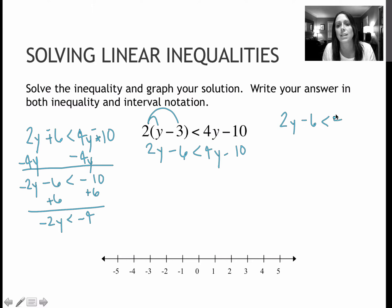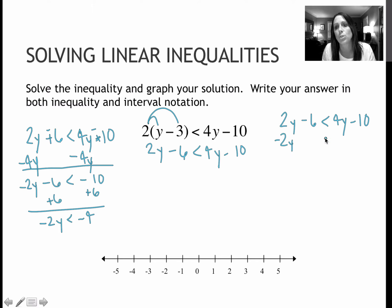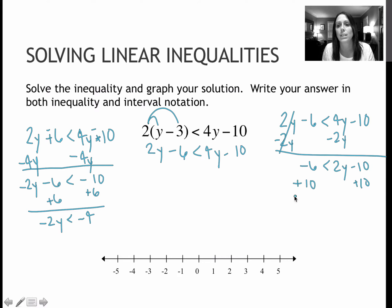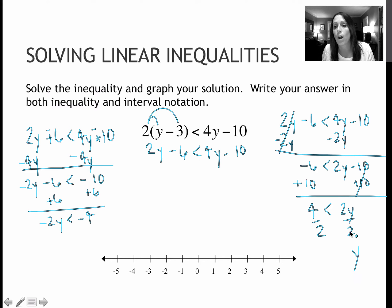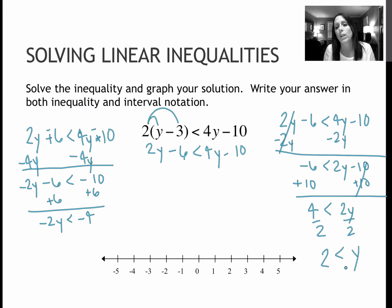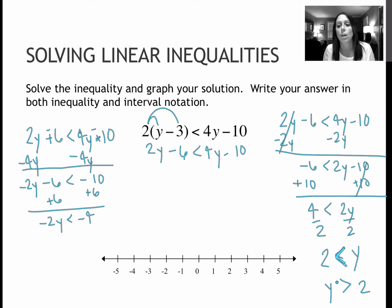Recopying: 2y minus 6 is less than 4y minus 10. My other option — over here I subtracted 4y because I wanted everything on the left side. This time I'm going to subtract 2y because I want to deal with a positive y value. So 2y minus 2y goes away; I get negative 6 is less than 2y minus 10. Then I add 10 to each side: 4 is less than 2y. Dividing by 2 gives me 2 on one side and y on the other. Now my y is on the wrong side, so I can rewrite it as y is greater than 2, keeping the sign pointing in the same direction.